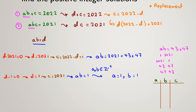Listing all solutions: when C equals 1, we have (A, B, C) as (1, 2021, 1), (2021, 1, 1), (43, 47, 1), and (47, 43, 1). When C equals 2021, A·B equals 1, so (A, B, C) equals (1, 1, 2021). In total, we found five solutions.